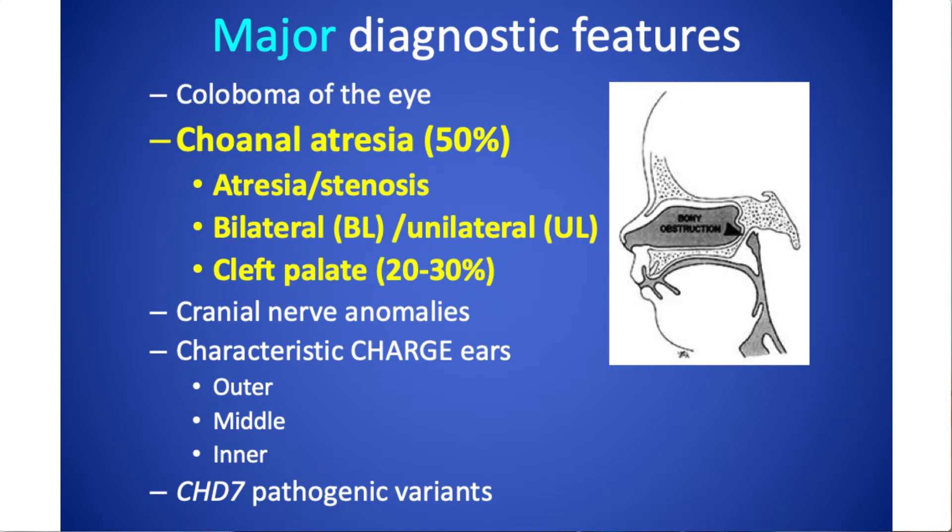The second major diagnostic feature is choanal atresia. About half of all individuals with CHARGE have this. The choanae are the passages from the back of the nose to the throat that allow you to breathe through the nose. Atresia means blockage; stenosis means narrowing; bilateral is both sides; unilateral is one side. For diagnostic purposes, cleft palate can be substituted for choanal atresia. About 20 to 30 percent of people with CHARGE have a cleft palate. Embryologically these are different things, but from a diagnostic point of view, you can use either one.